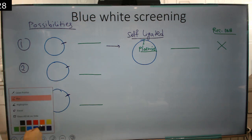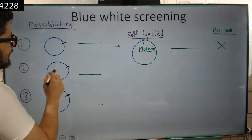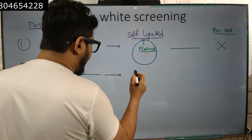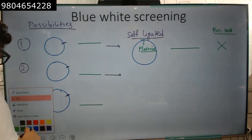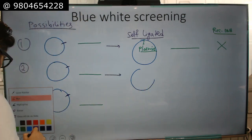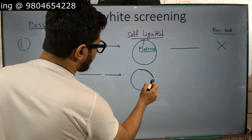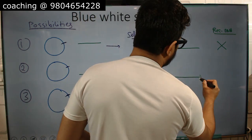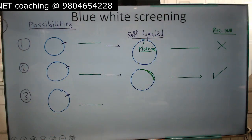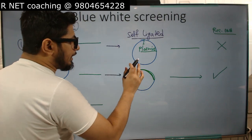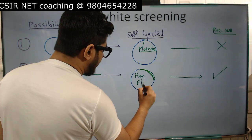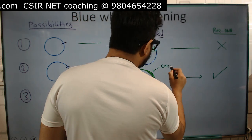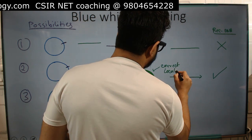Possibility number 2: we use the same restriction enzyme and the target DNA gets inserted in the proper area. So we form a recombinant plasmid where the target DNA is inserted in the correct location — very important.